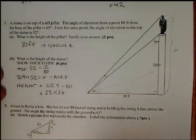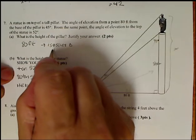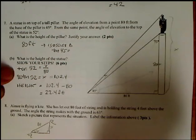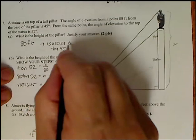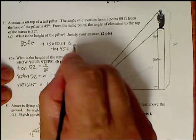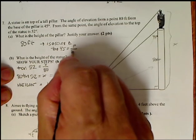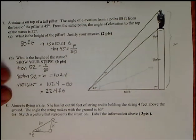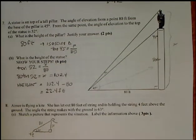Now you could have also done it using, you could have done tangent of 45 is equal to the pillar. I'm going to write as P over 80. And you would have gotten 80 because when you do tangent of 45, it equals 1.